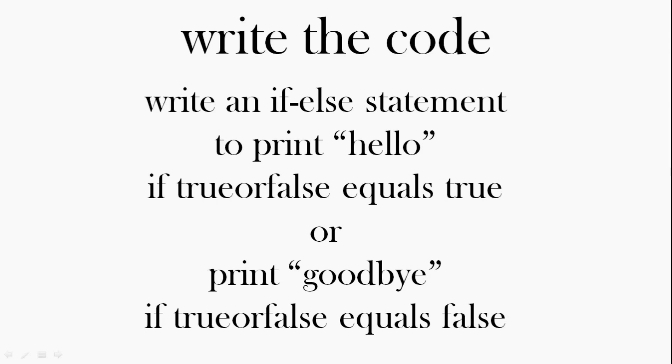So that's the same as the last question, but this time if true or false equals false, the code should make the print statement print goodbye happen. So if true or false is true, print hello. If it's false, print goodbye. Okay, good luck with those tasks and come back when you feel you've got the answers to check to see how well you did.